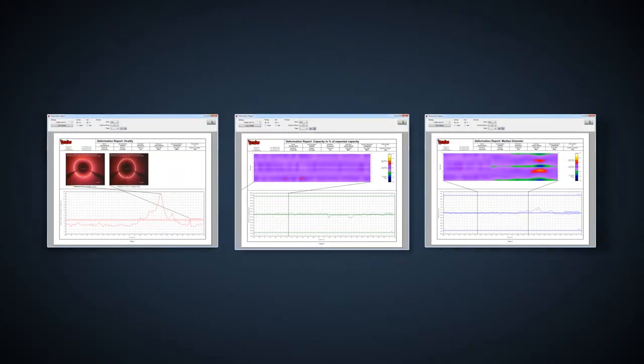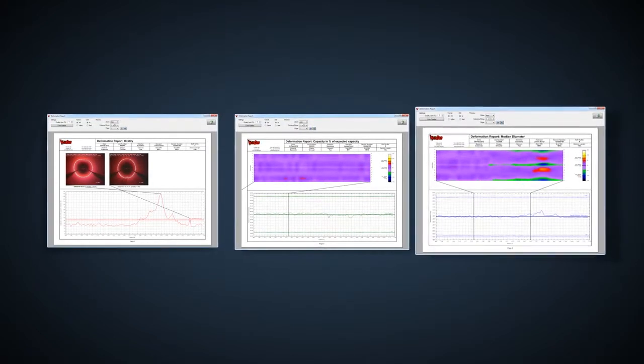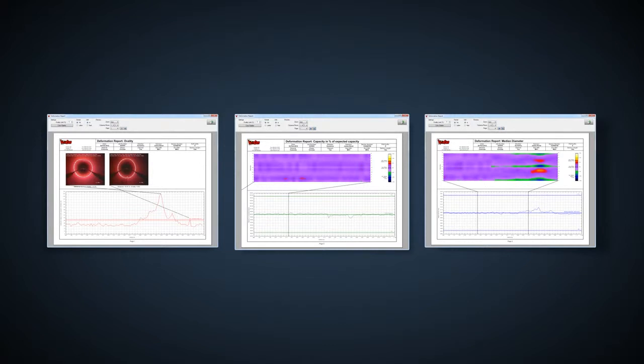LaserScan generates reports for a variety of pipe attributes: deformation, ovality, capacity, pipe diameter, water level, and details of laterals.